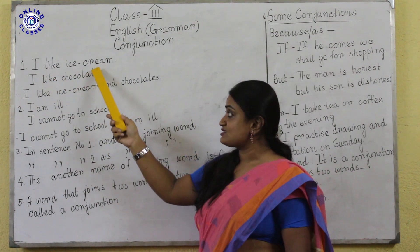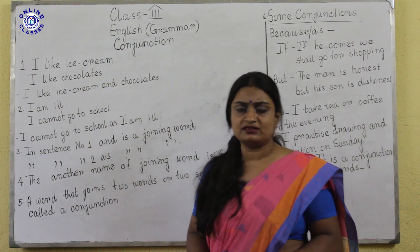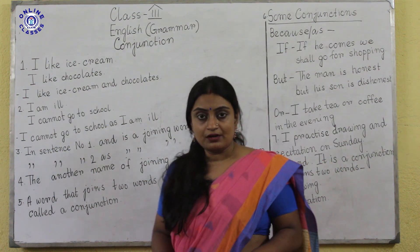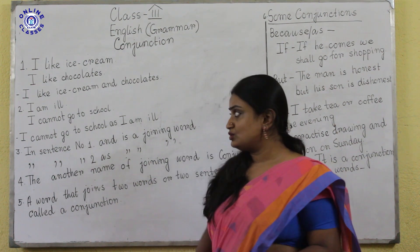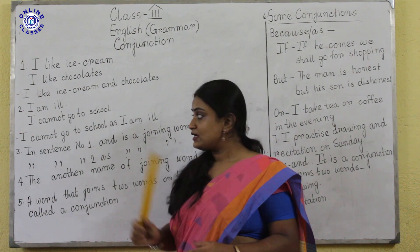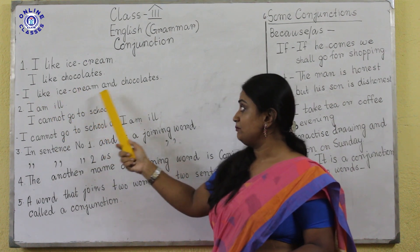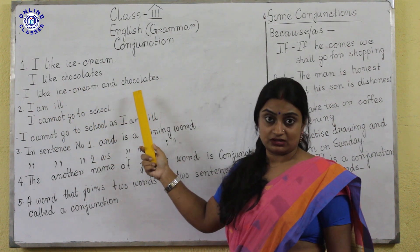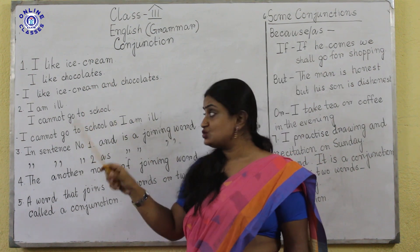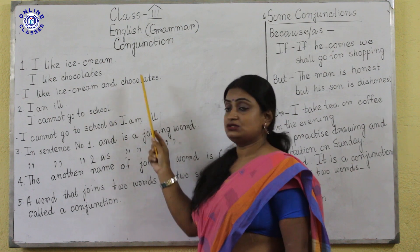I like ice cream. I like chocolates. How can we join these two words? We have done this before but we did not know the particular name of the word. We join it like: I like ice cream and chocolate. So 'and' is the word that is joining two words — ice cream and chocolate.